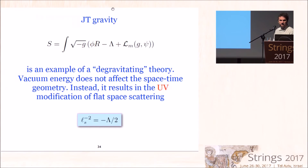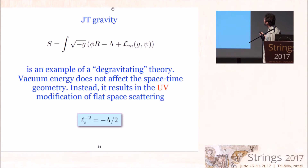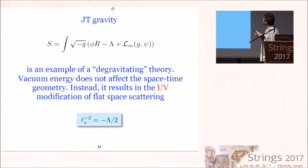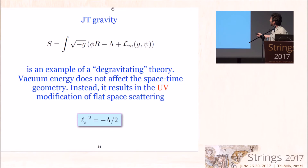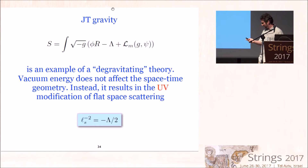One final comment, unrelated to QCD: Jackiw-Teitelboim gravity is a curious example of what people call a degravitating theory — the vacuum energy doesn't curve spacetime because the dilaton is a Lagrange multiplier forcing flat spacetime no matter what. So the cosmological constant doesn't affect cosmology; instead, what one would expect to be an IR quantity becomes a UV quantity — the string tension is set by the vacuum energy of this theory. The modification of scattering in the UV at scale ℓ_s^{-2} is given by the vacuum energy of JT gravity.